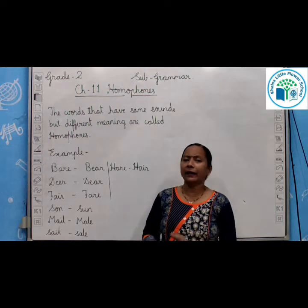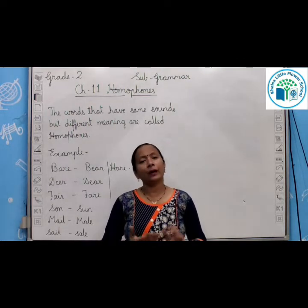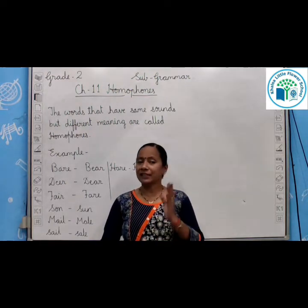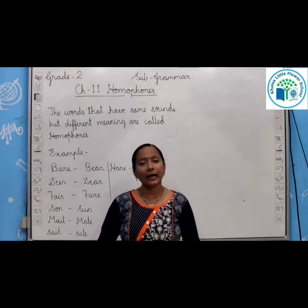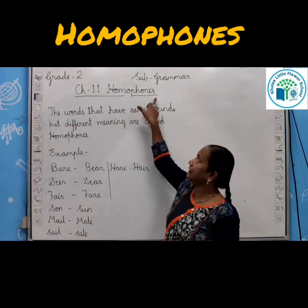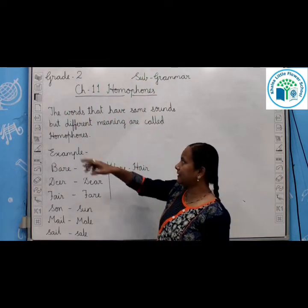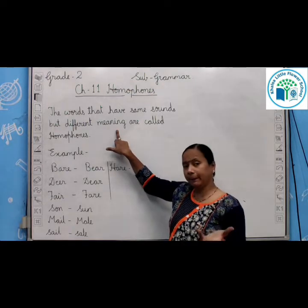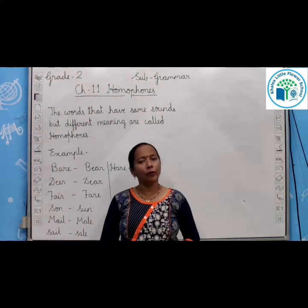There are many such words in the English language whose pronunciation is the same — kai saare shabd jo bolne mein ek jaise lagte hain — magar unka spelling aur unka matlab bilkul alag hota hai. So this is called a homophone in grammar. Words that sound the same but whose meaning and spelling when written are different — unko kya kaha jata hai? Homophones — H-O-M-O-P-H-O-N-E-S. The words that have the same sound but different meaning and spelling are called homophones.